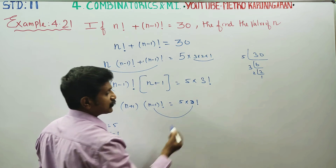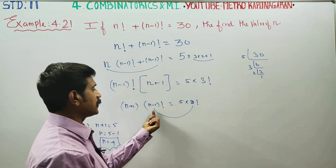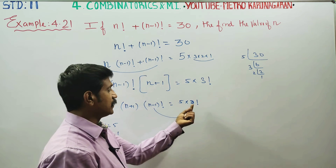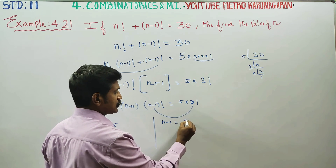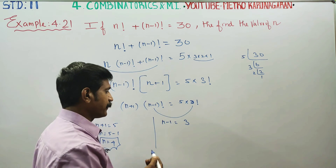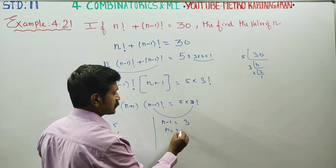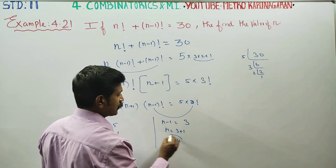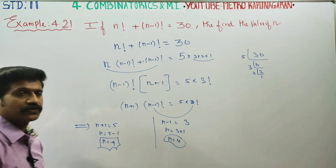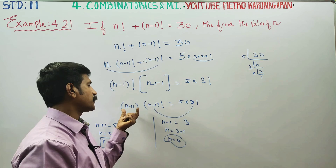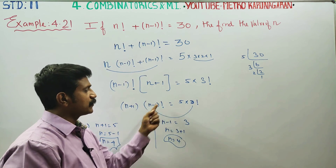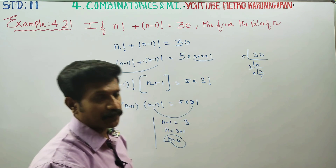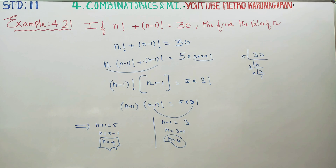So the value of n factorial corresponds to n equal to 4. This helps us verify the answer. You can easily find the value of n. Thank you.